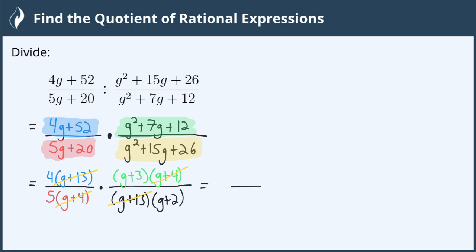Now, what's left over? Well, on the top, I still have my 4 and g plus 3, and then in the denominator, I have 5 and g plus 2. And that is the quotient of our rational expressions.